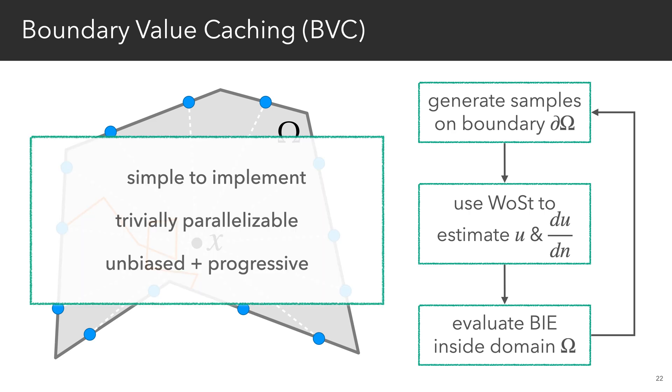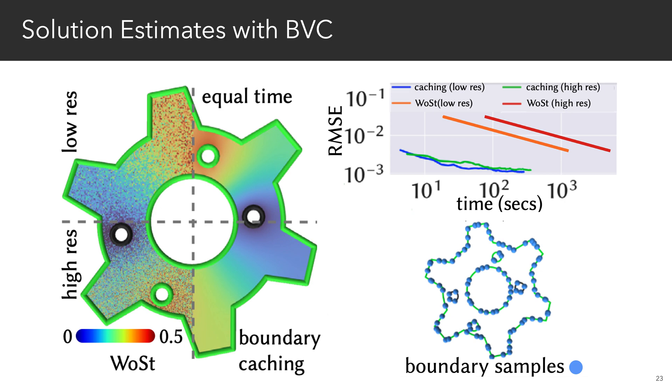Our algorithm is simple to implement, trivially parallelizable, and it's both progressive and unbiased. The sharing of walks between points that boundary value caching enables results in much smoother solution estimates in equal time when compared against point-wise estimators like walk-on-stars, which have to compute the solution independently at every single point in the domain.